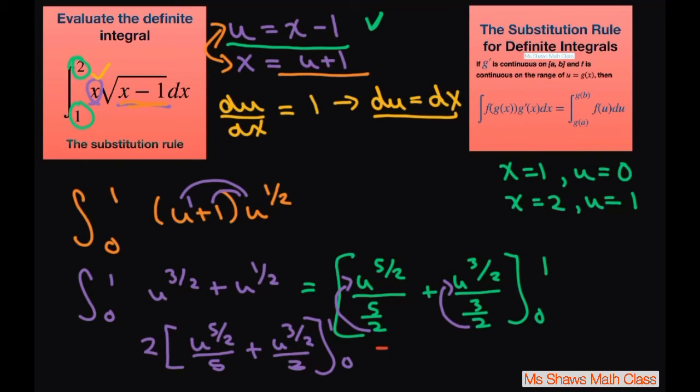This is going to be 2, and then 1 to the 5 halves power is just 1. This is 1 fifth plus 1 third.